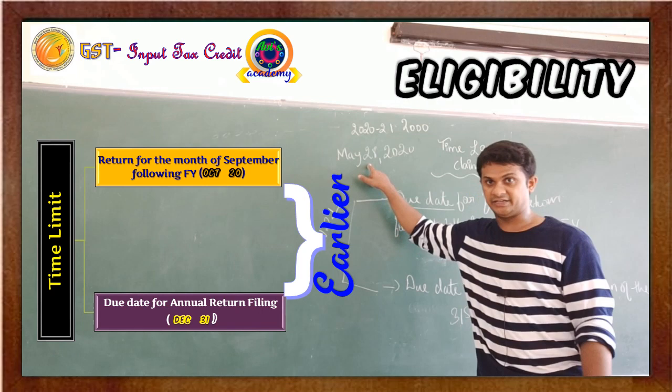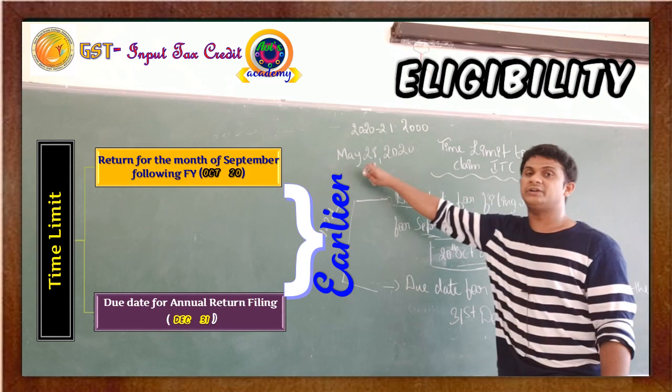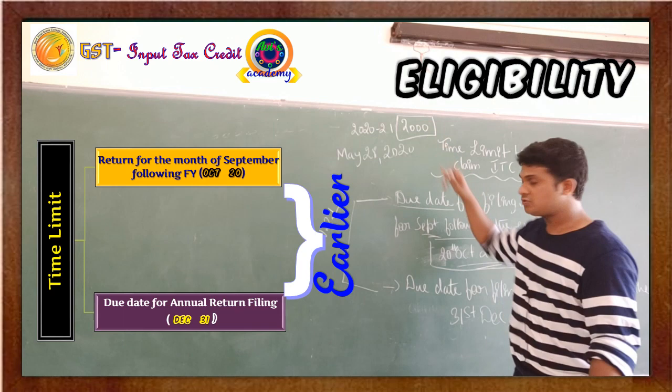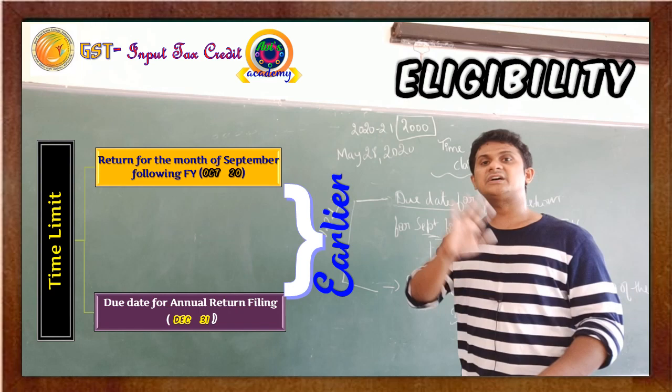So from the invoice date of May 28th, 2020, the time limit to claim input tax credit runs until whichever date comes first — 20th October 2021 or 31st December 2021. In this case 20th October 2021 is earlier. So the 2,000 rupees of input tax credit must be utilized by 20th October 2021. This is what subsection 4 of Section 16 of the GST Act discusses.